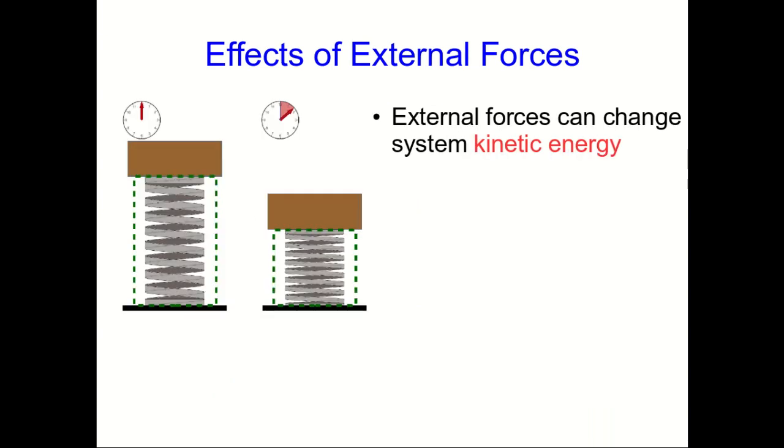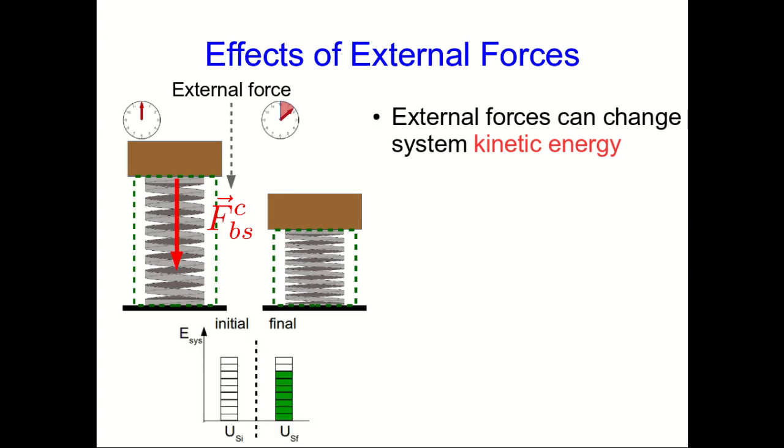Here's another example. Let's think about a spring being compressed by a brick that's been placed on top of it, and our system is just the spring. So the brick is exerting a force on the spring, and that's an external force because the brick isn't in our system, and we can see that our system is gaining spring potential energy. But once again there doesn't appear to be any corresponding reduction in an internal energy of the system, so it looks like this is not a closed system.